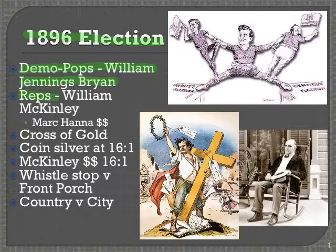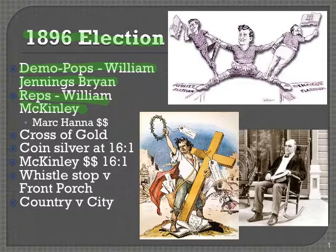Bryan will be facing off against the Republican nominee, former Ohio congressman William McKinley. You can see a picture of McKinley at the bottom sitting in his rocking chair. McKinley will be the face of the campaign — a friendly, outgoing former politician that a lot of people like. But the man running the show, calling the shots, and really running the whole campaign is a millionaire businessman named Mark Hanna. He's the one getting all the money donated for the campaign and telling McKinley what to do; McKinley just goes out and shakes hands.